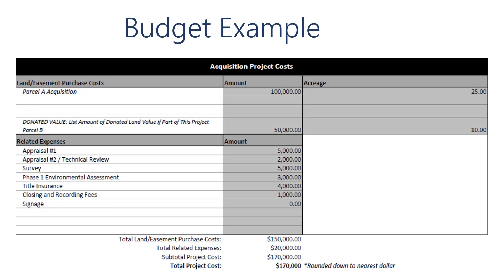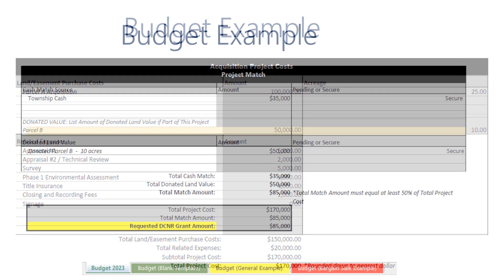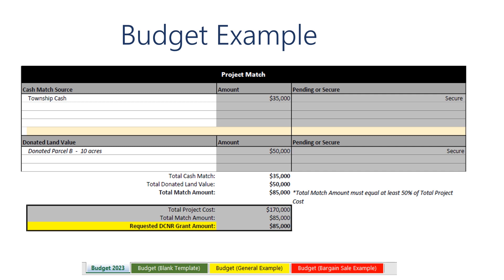We are now going to go over a budget example. For this example there is a land value of $100,000 and a donated parcel of $50,000. This budget also includes $20,000 in eligible expenses, for a total project cost of $170,000. Since the donated parcel land value is $50,000, the grantee will need to have cash for the rest of the match in the amount of $35,000, which equals $85,000 — half the total project costs. DCNR will cover the other half, which would be $85,000. Please use whichever budget template is appropriate for your project, as you will need to use our templates for your budget to be accepted.